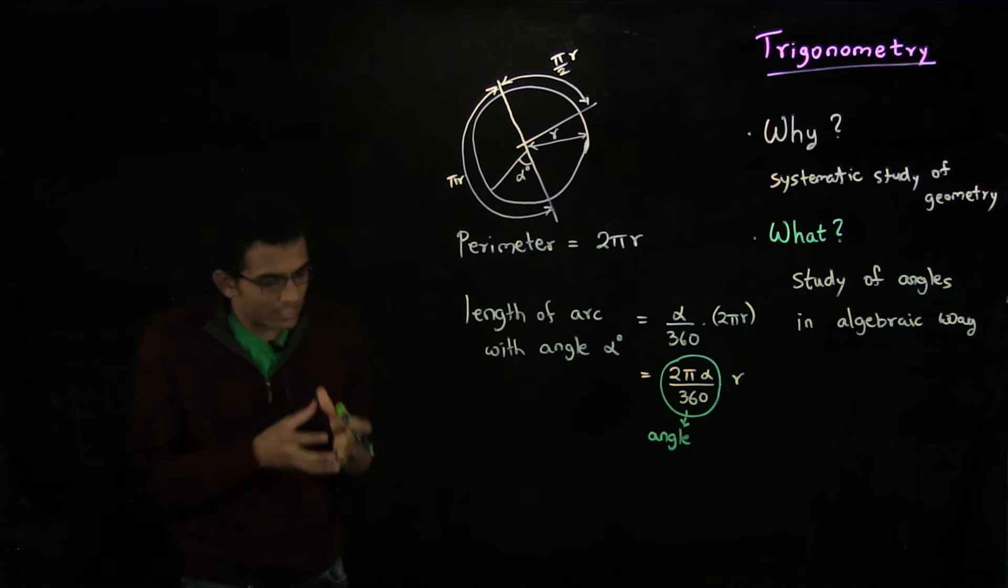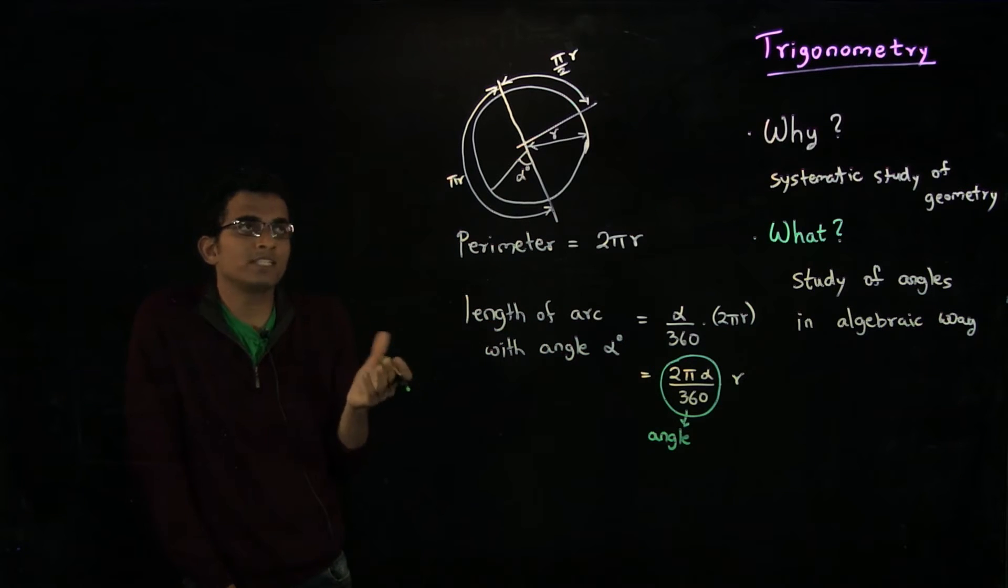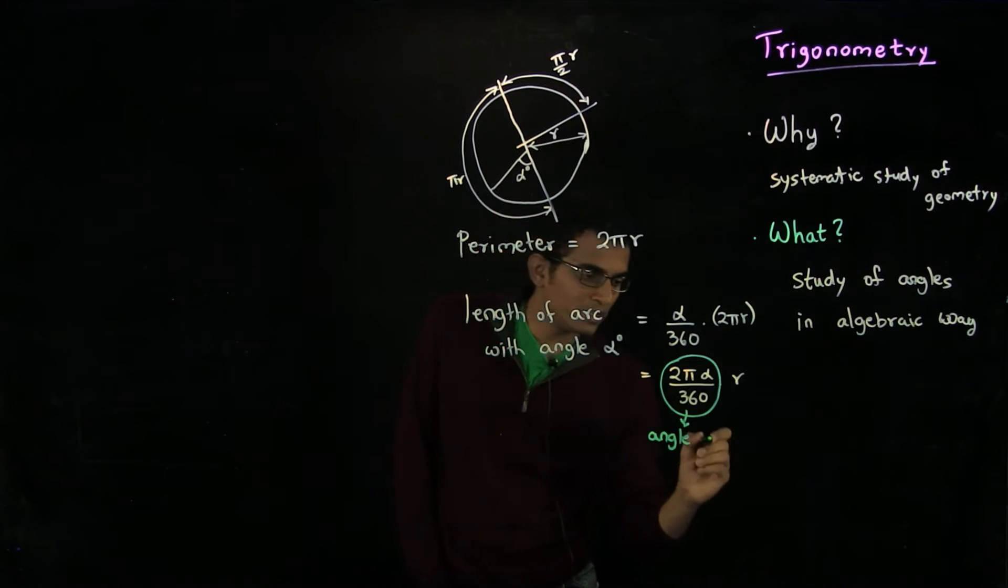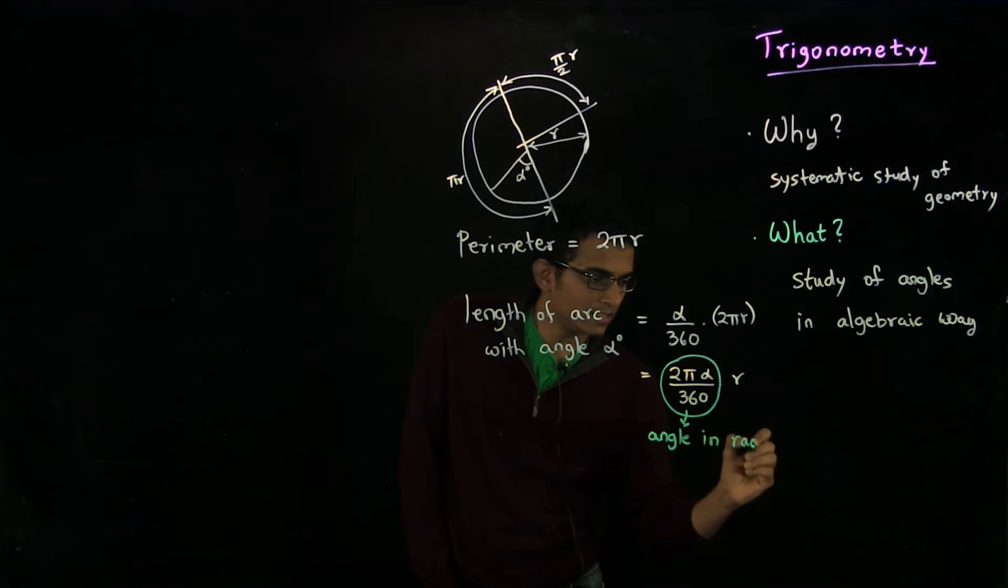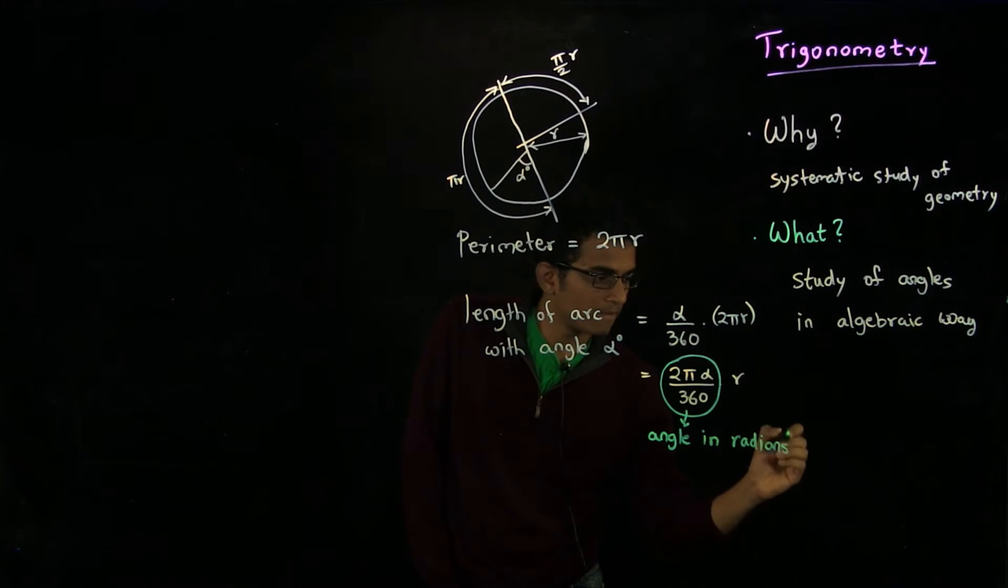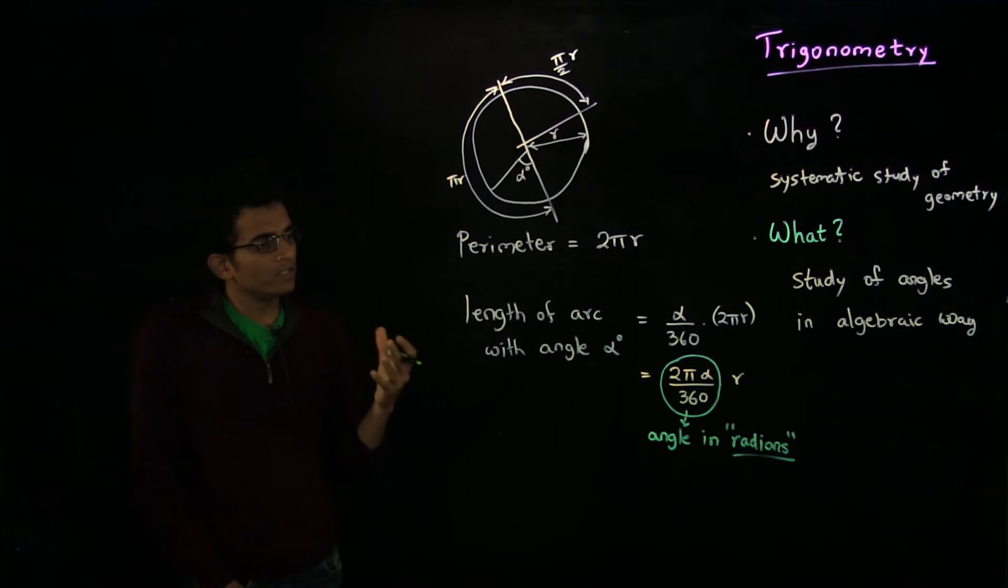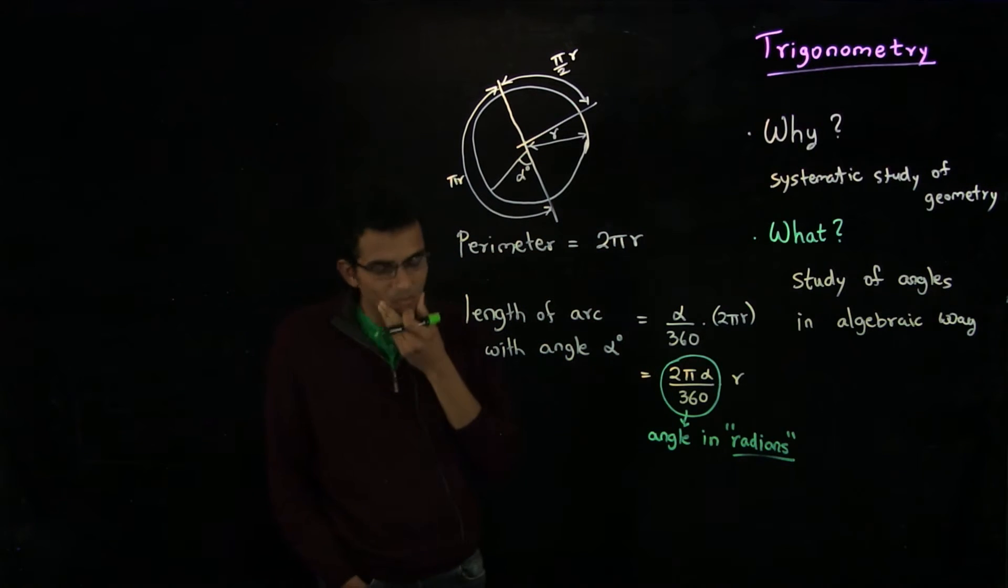As there are different ways to measure objects like length—you measure it in meters and inches and so on—similarly, this is a different unit of measuring angles. This is angle in radians. Thinking in terms of radians is very important.